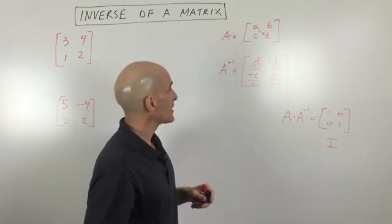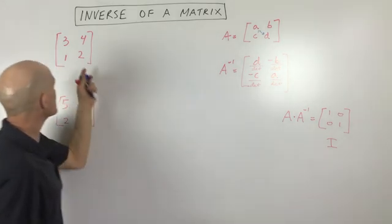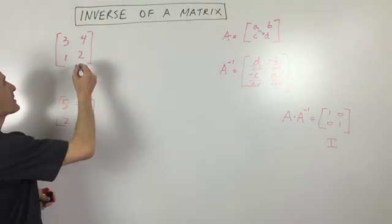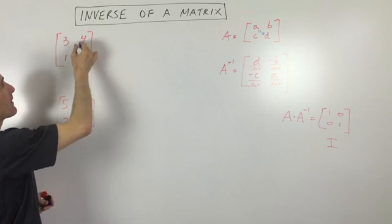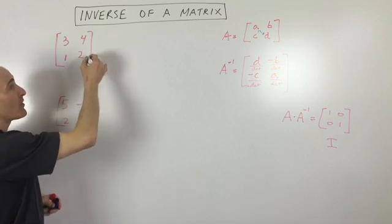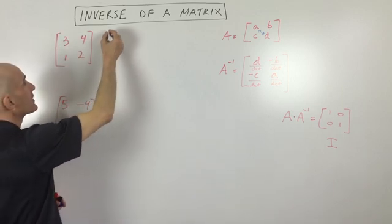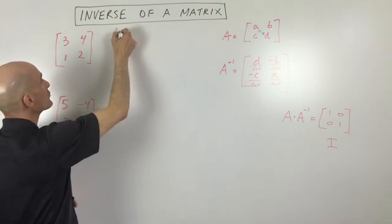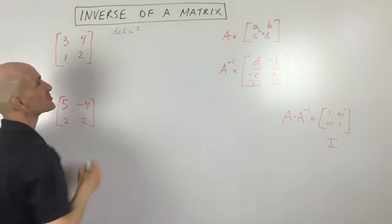So let's take a look at an example. The first thing I'm going to do is take the determinant. That's going to be six minus four — this diagonal multiplied together minus this diagonal multiplied together. So six minus four is two. I'm going to write the determinant equals two.